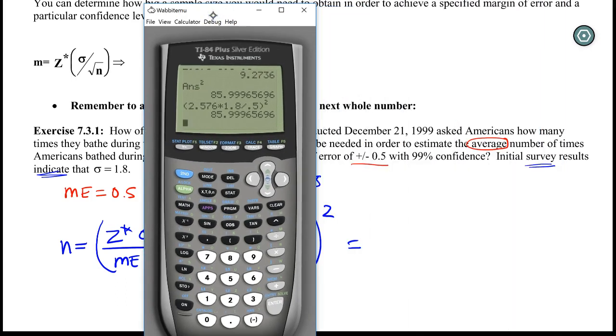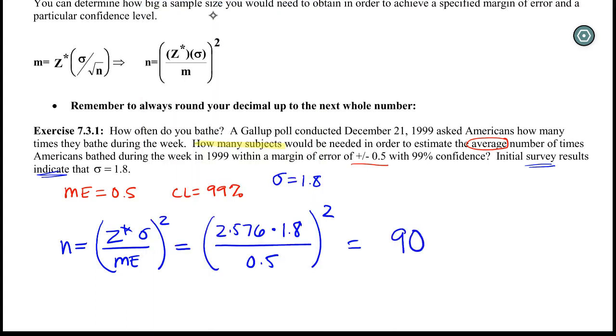Just like before, we always need to round up to the next whole number. So this means we need to take 90 subjects in order to estimate the number of times someone showers,